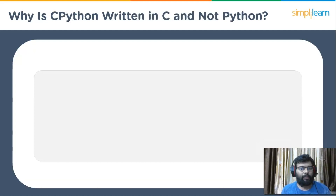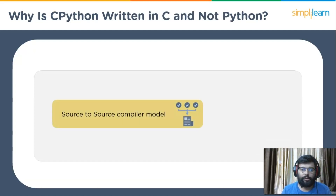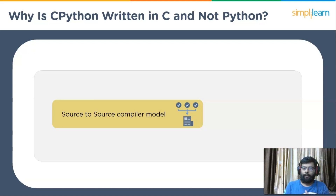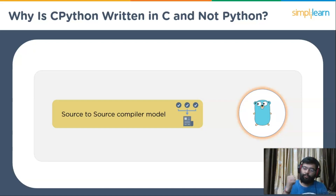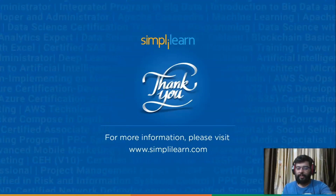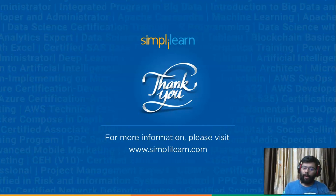CPython follows a source-to-source compiler model. These source-to-source compilers are first written in another language that already has a compiler. A good example is the Go language — the first Go compiler was based on the C programming language, and once Go could be compiled, the compiler was rewritten in Go itself. With that, we've come to the end of this session.